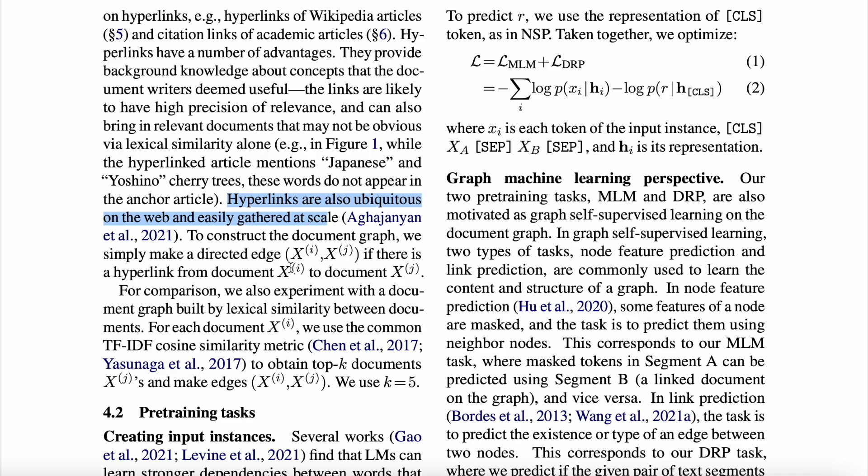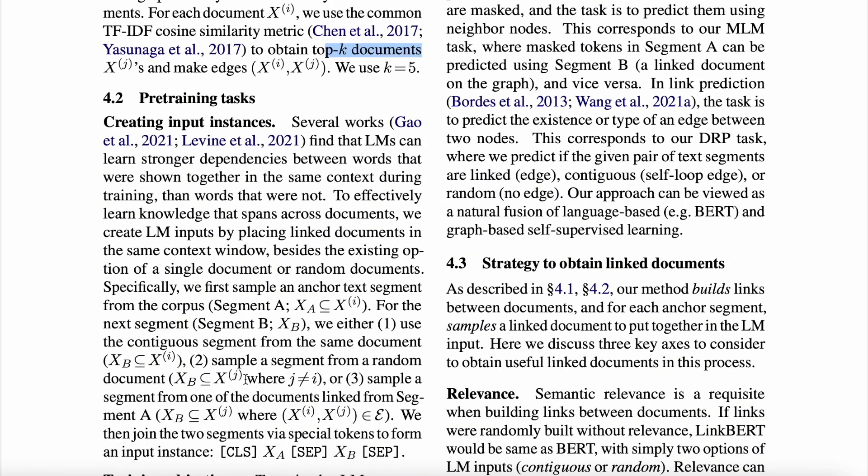But for comparison, they also experimented by building document graphs using lexical similarity between these two documents, where they have used TF-IDF cosine similarity metric to get top five documents, and that's the link that they create between these two documents. So yeah, that's about the comparative study that they do in the graph aspect.